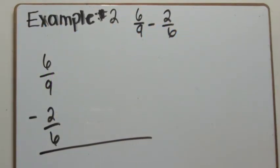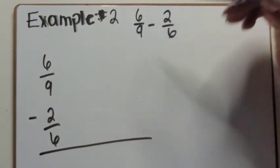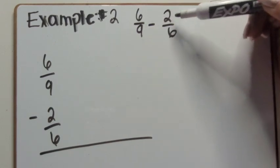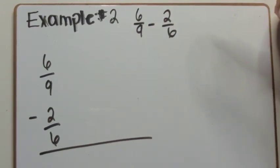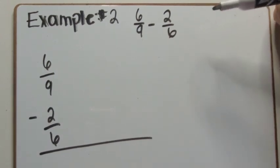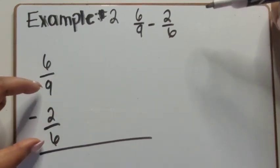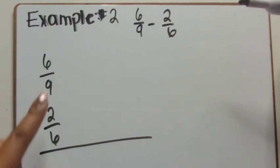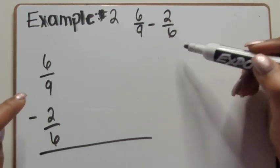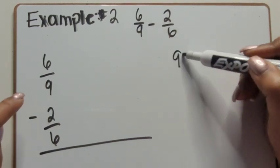In example two, we're going to take six-ninths and subtract two-sixths. Again, we're going to be listing out the common multiples to determine a common denominator in order to subtract. So we have six and nine as our denominators. Let's write those out.